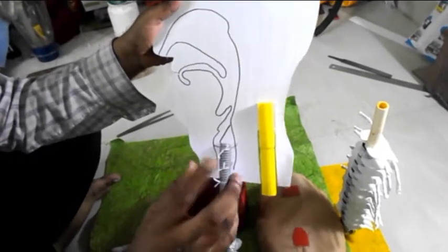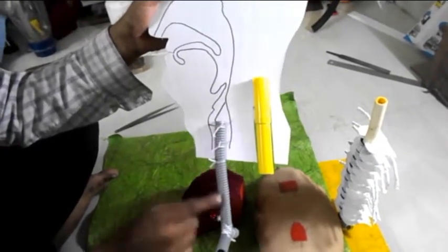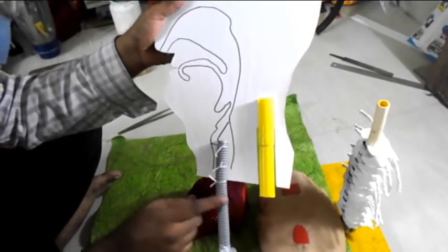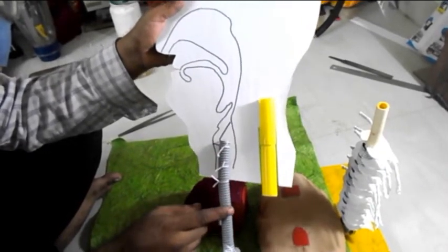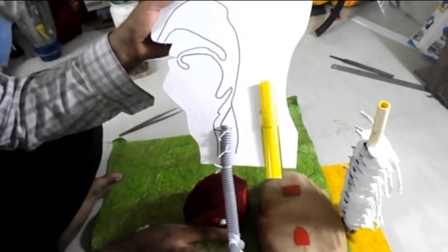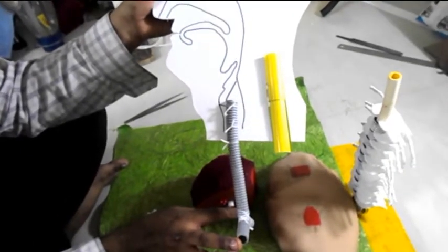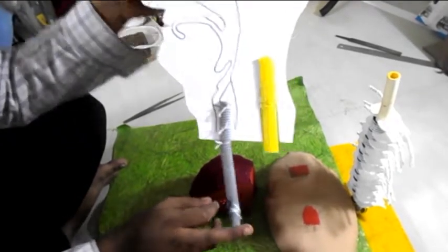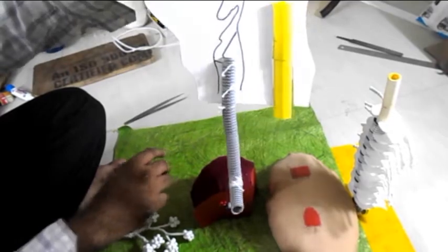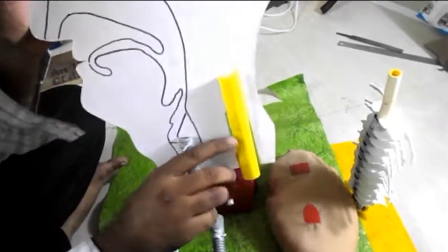And then this is the trachea. This branches into bronchus - this is the left bronchus and this is the right bronchus. Then it connects to the lungs.